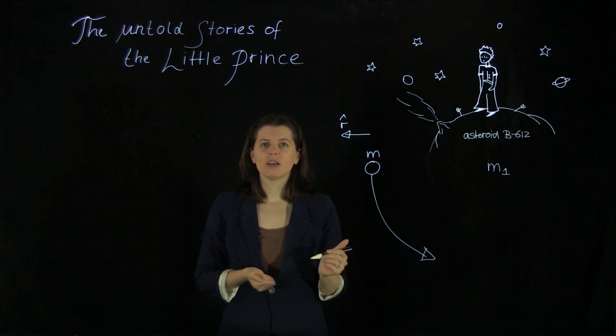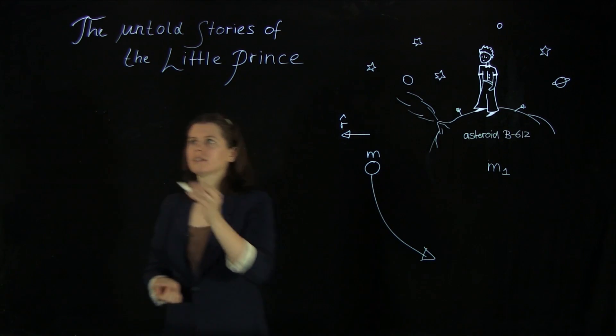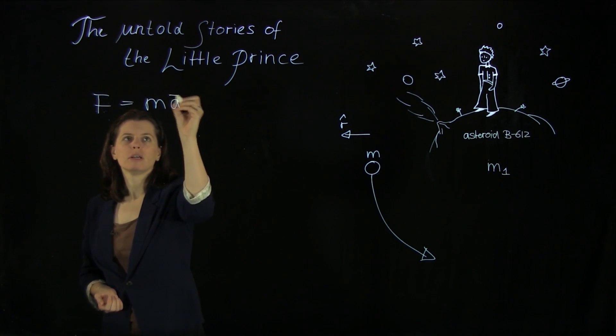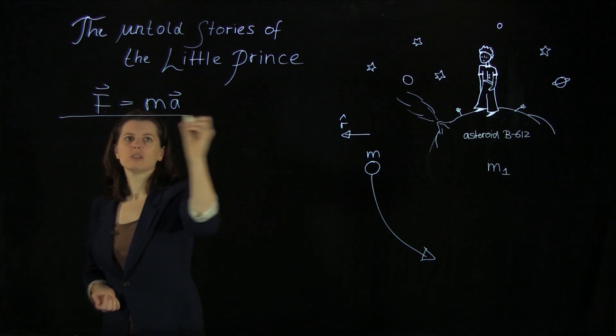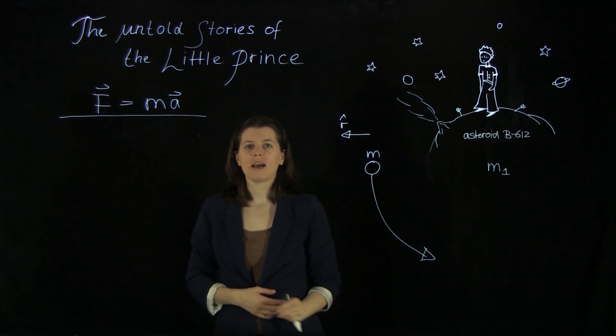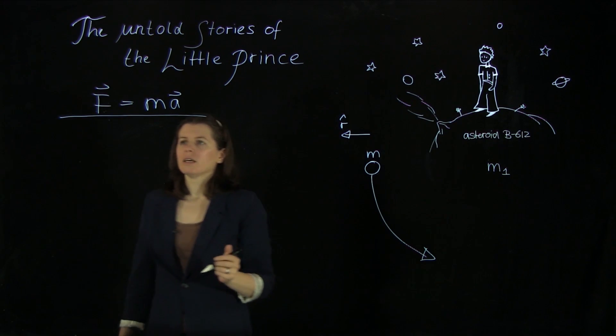We need to consider all of that for our F equals ma analysis that we are going to do now. Because the Little Prince wants to know how far this little body is away from his asteroid.